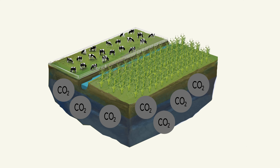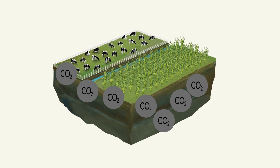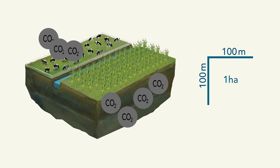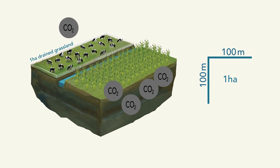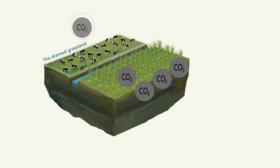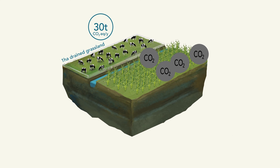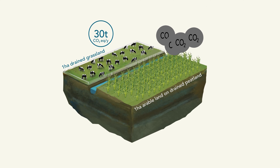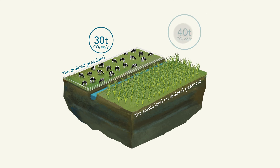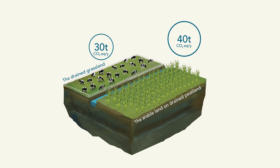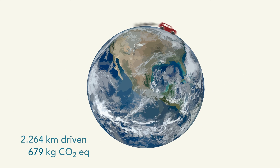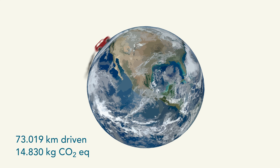Thus, the sequestered carbon is released to the atmosphere as carbon dioxide. Under temperate climate, one hectare of heavily drained peatland used as grassland releases about 30 tonnes CO2 equivalent greenhouse gas emissions per year. Conventionally managed arable land on peatland releases about 40 tonnes of CO2 equivalent greenhouse gas emissions annually. On average, this corresponds to 150,000 kilometres driven in a medium-sized car — that's almost four circumnavigations of the world.